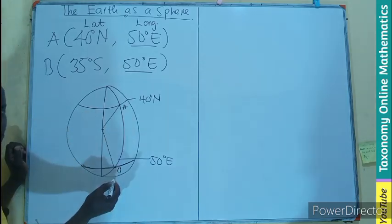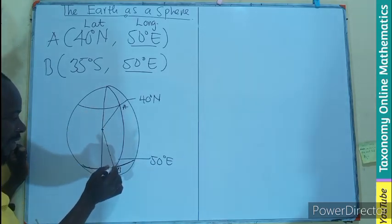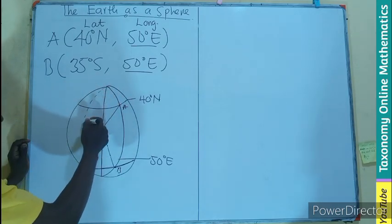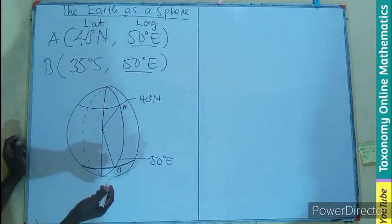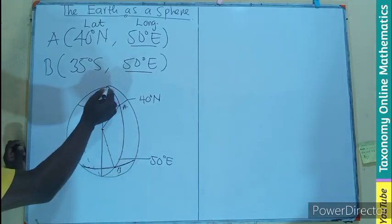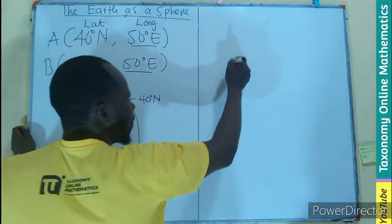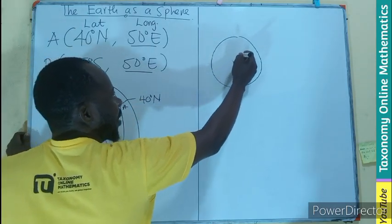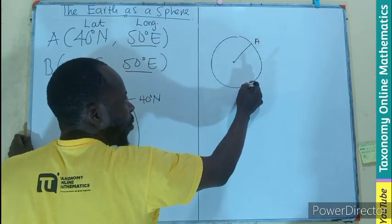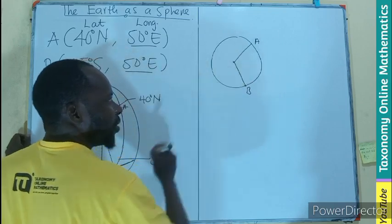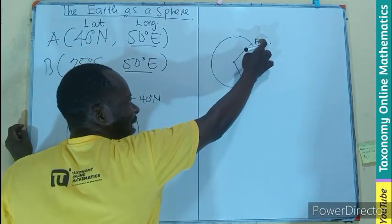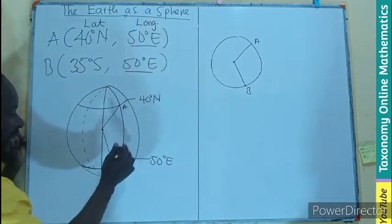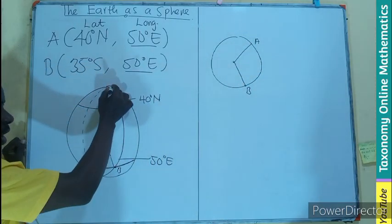This is going to be the radius — a line from the center to the circumference along this longitude. So we form a circle in this manner. Point A is here and point B is here. The angle formed by this arc — the angle at the center of the sector — this angle here is the common longitude for both points.